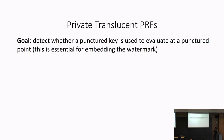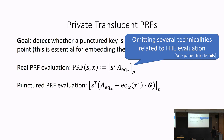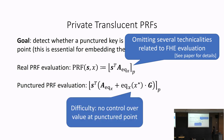Our final goal is to build a private translucent PRF. We want to detect whether a punctured key is used to evaluate the PRF at the punctured point. In our construction, the real PRF evaluation is s-transpose times A_x, and the punctured evaluation has a different form. When using the punctured key to evaluate at the punctured point, we get a deterministic function with no additional randomness and no control over the value obtained. It becomes unclear how to detect whether an evaluation corresponds to the punctured point or to the PRF elsewhere.